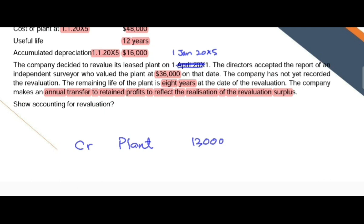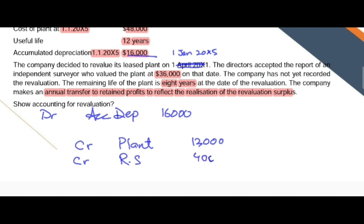Second, we need to remove the accumulated depreciation, which is given as $16,000. This creates a revaluation surplus of $4,000. Remember, the revaluation surplus is the difference between carrying value and fair value. The fair value is $36,000, while cost is $48,000 and accumulated depreciation is $16,000, giving a carrying value of $32,000. As fair value is greater than carrying value, the difference of $4,000 is recorded as revaluation surplus.